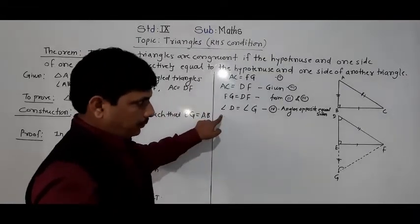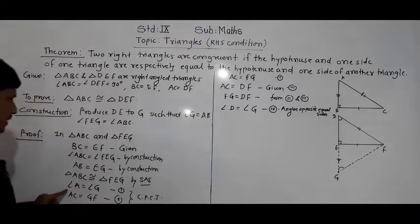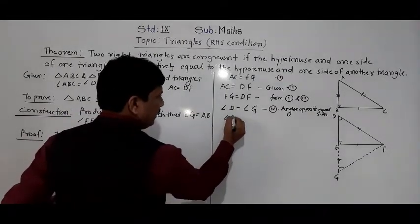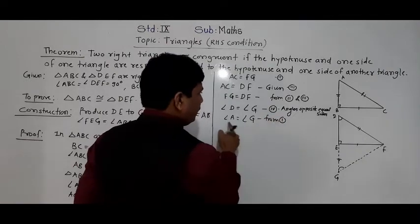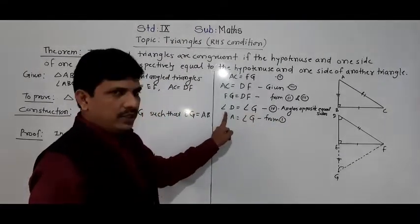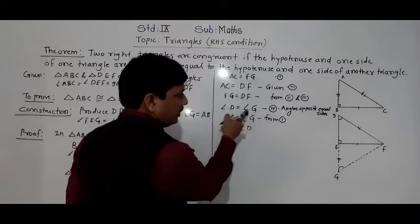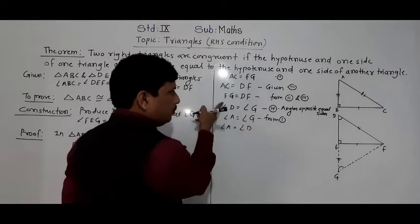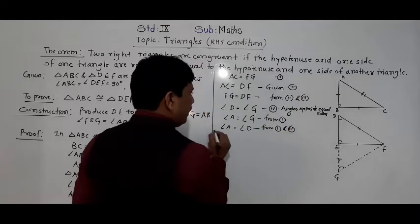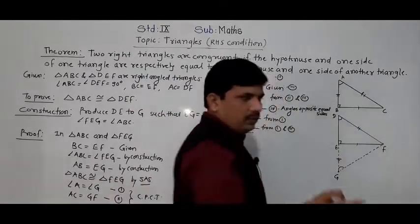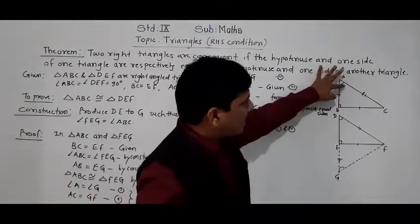Angle D equals angle G — result four. And angle A is equal to angle G — result one. So from results one and four, angle A is equal to angle D.